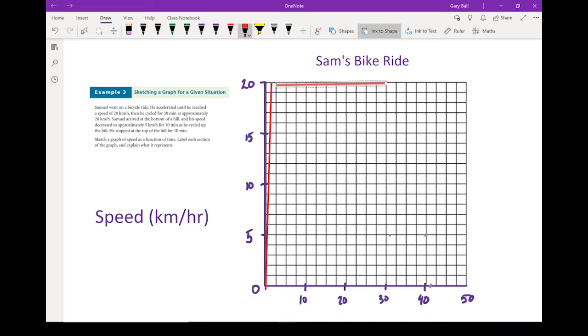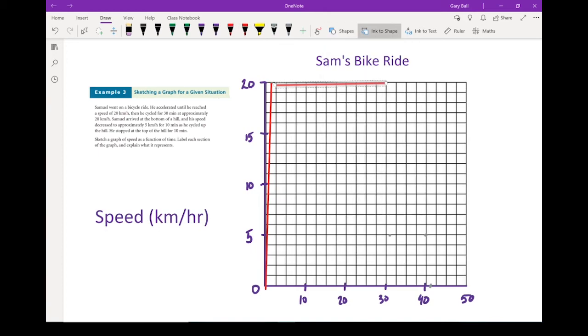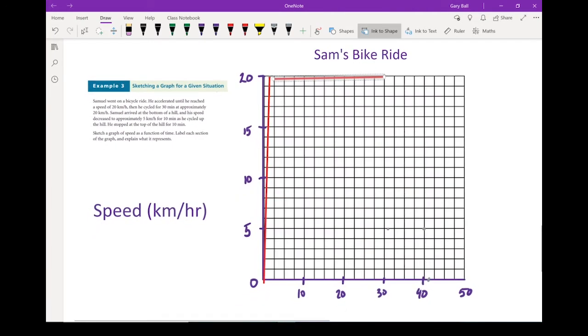After that, he hits the bottom of the hill and he slows down to 5 kilometers per hour. Same thing again. You can't slow down immediately to 0. It is going to take you some time. We don't have any information, so we'll just do it close enough. Make sure it's on a bit of an angle. He continued up that hill at 5 kilometers an hour. So he's going at a constant speed for about 10 minutes. So we're going to go from here over here.